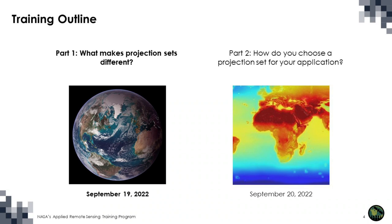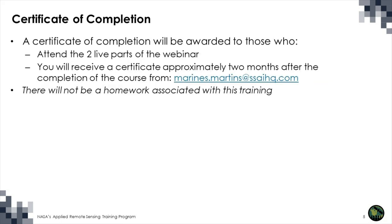Today in Part 1, we'll be covering what makes projection sets different, discussing key distinguishing features. In Part 2 tomorrow, we'll discuss how to choose a projection set for your particular application. A certificate of completion will be awarded to those who attend both live parts of the webinar, and you will receive a certificate approximately two months after completion from Marinus Martins. Note there will not be homework associated with this training.